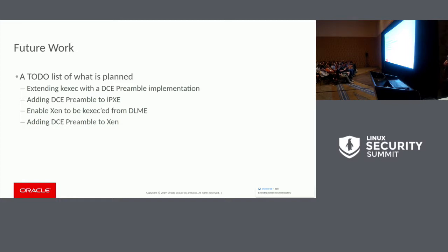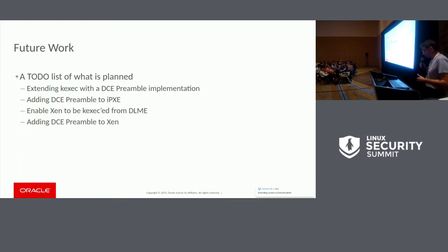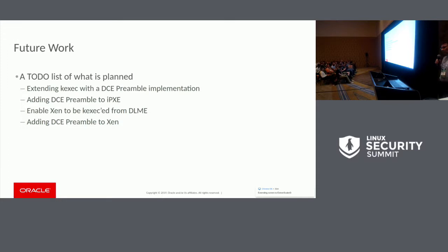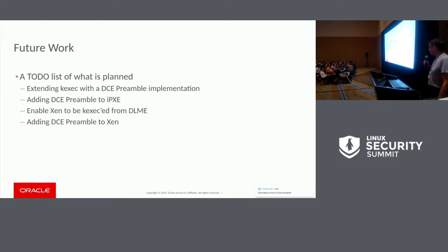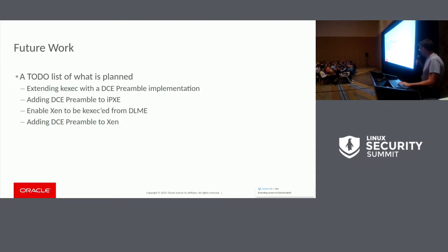When we discussed the project among people, it appeared that more and more features are needed, but we are not able to provide all of them in the first step, so there is a growing to-do list. The first thing worth mentioning is extending kexec with a DC preamble implementation — this way you'll be able to restart dynamic launch from the running OS. We're also considering adding DC preamble to iPXE, and extending Xen so it can be executed from kexec as a DLME and adding DC preamble to Xen as well.